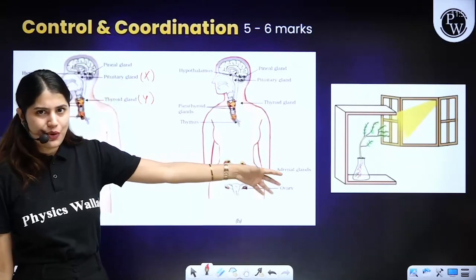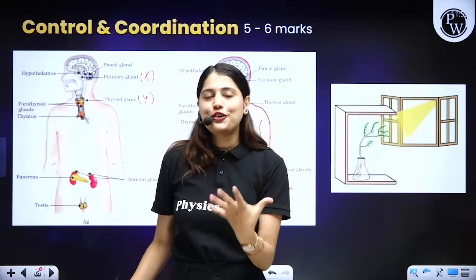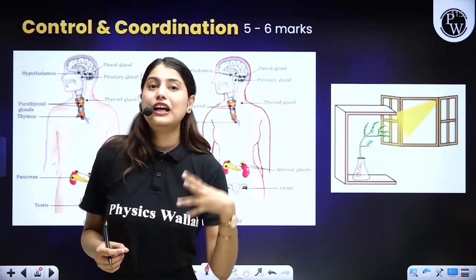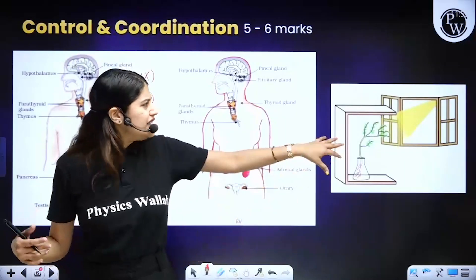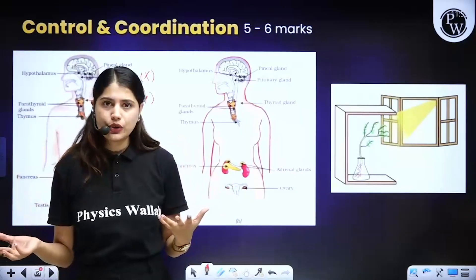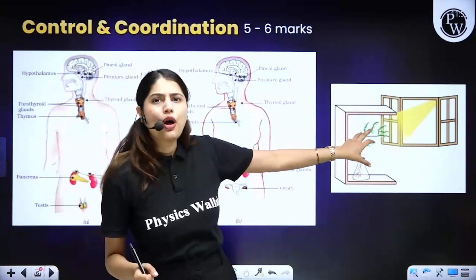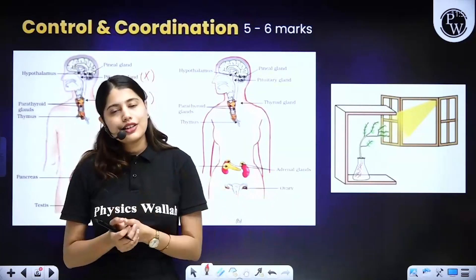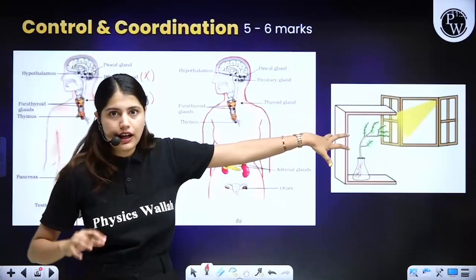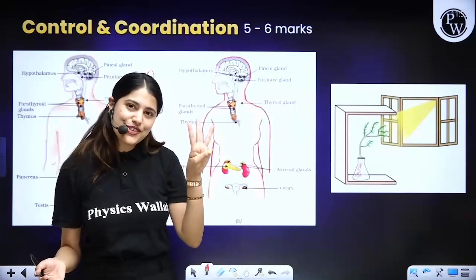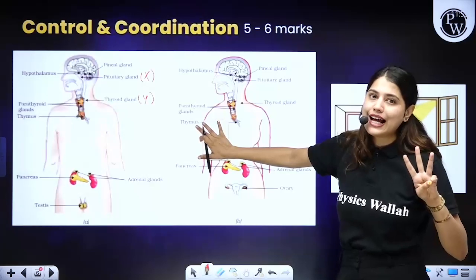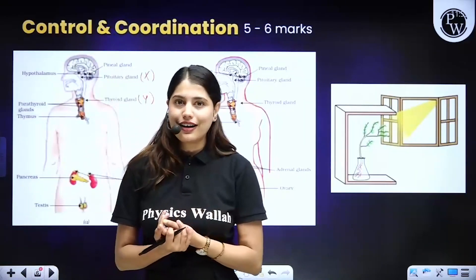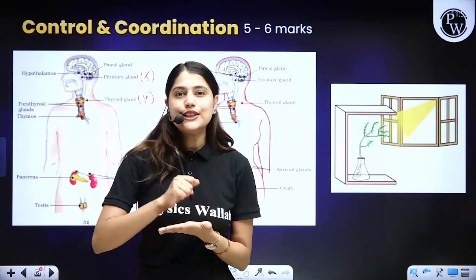Another important topic shown on screen is phototropic movement. Not only phototropic movement, but all tropic movements are very important for this chapter — phototropic and geotropic movement. Questions can be an MCQ showing different types of tropic movements asking which is correct, or they can ask you to explain the mechanism of how the movement happened. So the three topics from this chapter are: neuron, endocrine glands and their functions, and tropic movements.